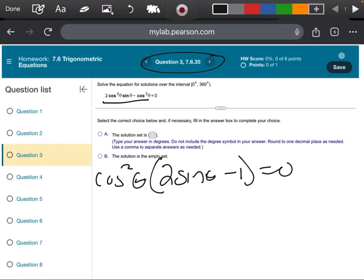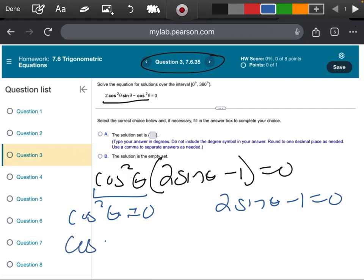I'm going to set each part equal to 0. So I'm going to say cosine squared theta equals 0, and 2 sine theta minus 1 is equal to 0. If cosine squared theta is equal to 0, that means that cosine theta is equal to 0.